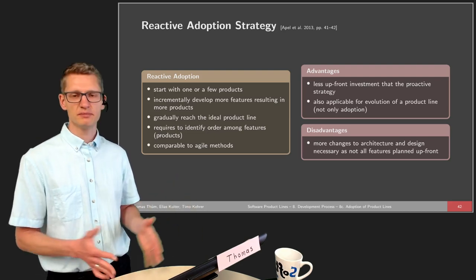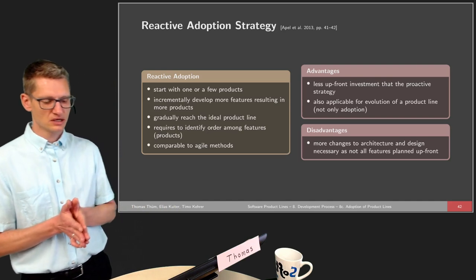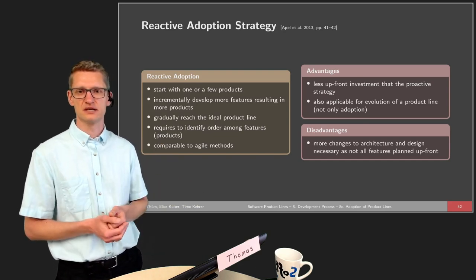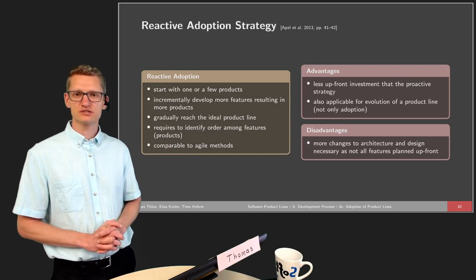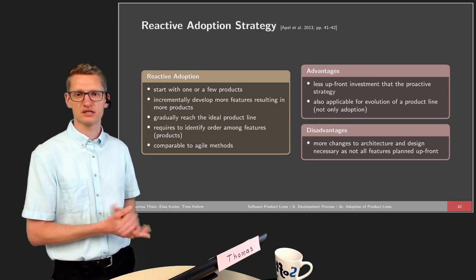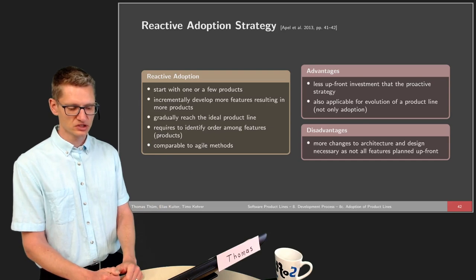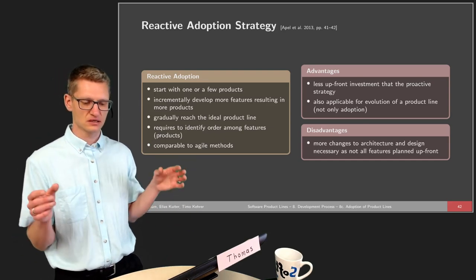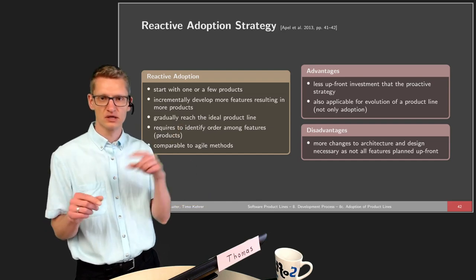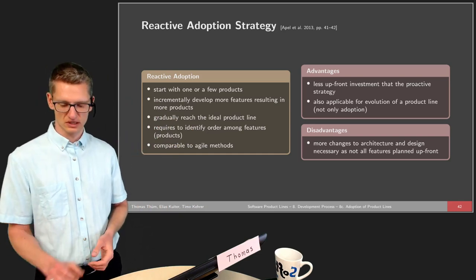These are the three basic strategies, and in practice we often see combinations. The reactive adoption strategy doesn't specify whether existing products are used, so we can combine it with the extractive approach — developing one product first, then the second, then the third, and only those that are needed. Proactive, reactive, and extractive are three corner cases, and in practice we will find points in the middle that mix and match these different strategies for their needs.